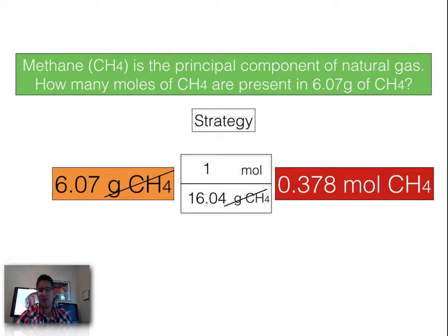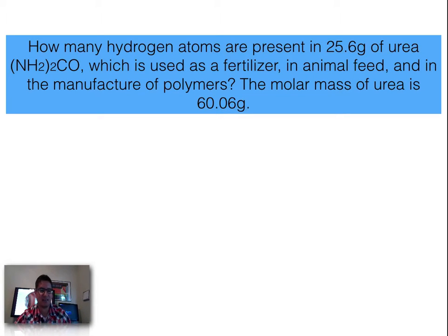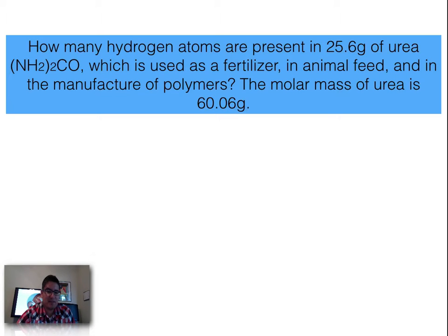So in 6.07 grams of methane there are 0.378 moles. The final question is more involved: how many hydrogen atoms are present in 25.6 grams of urea, (NH₂)₂CO? The parentheses indicate NH₂ is a polyatomic group, and the subscript 2 outside means there are two of those, plus one carbon monoxide group. Urea is used as a fertilizer, in animal feed, and in the manufacture of polymers.